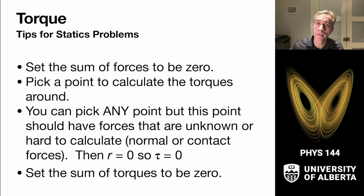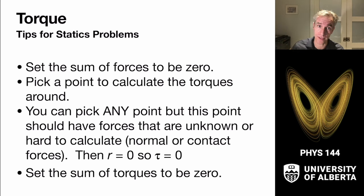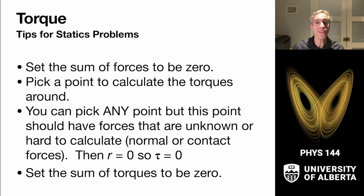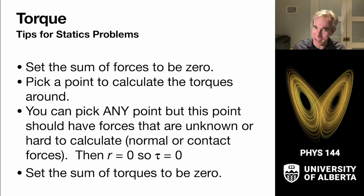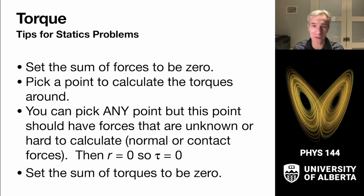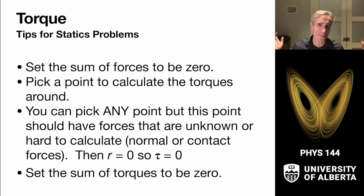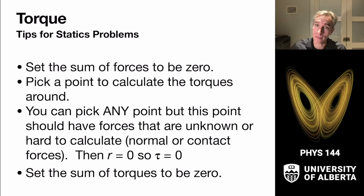To solve static equilibrium problems: set the sum of forces equal to zero, draw a free body diagram, then pick a point to calculate torques around. Since it's not rotating, you can pick any point. Pick somewhere with unknown or complicated forces as your pivot point — then the moment arms are zero and those torques vanish. You can even pick two different points; set torques equal to zero and work toward a closed system of equations.